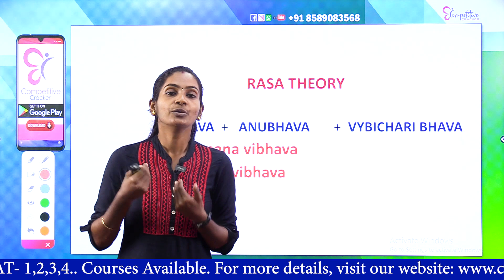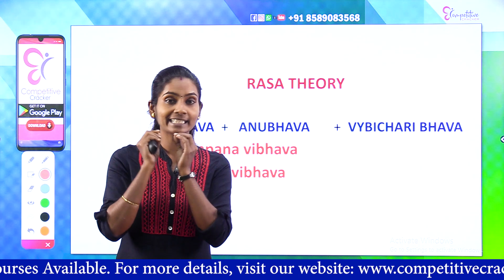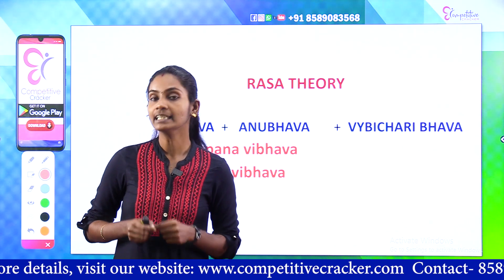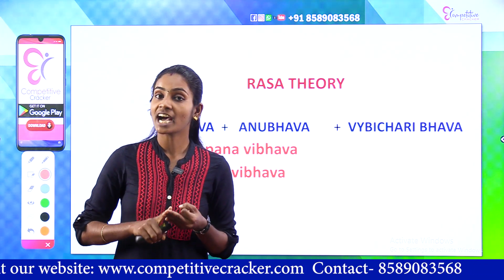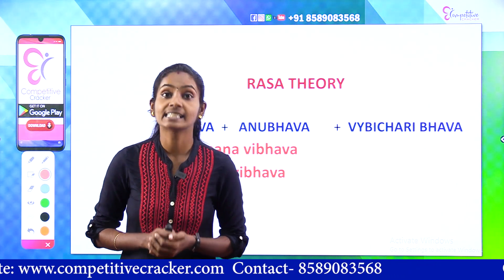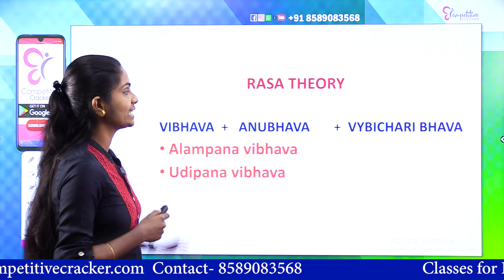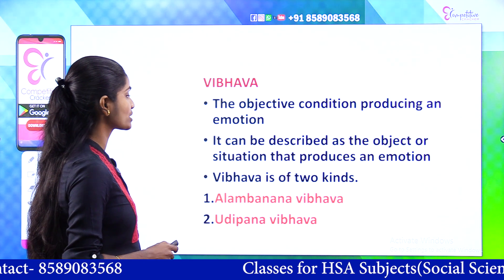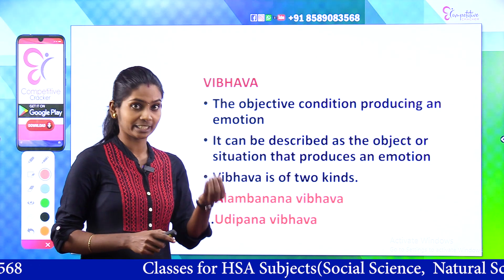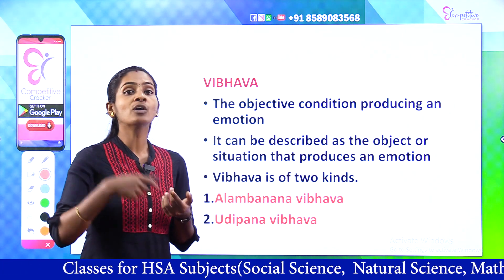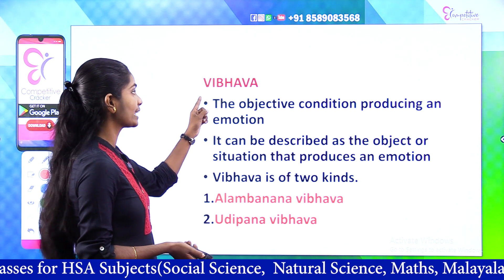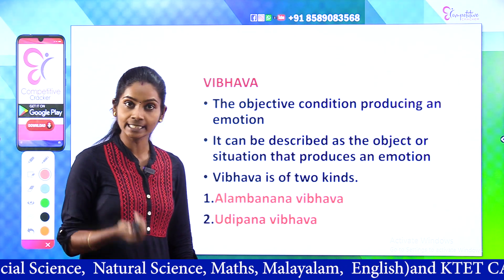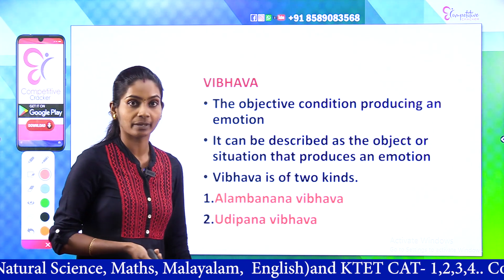A lot of emotions come together — that is what we call Vibhava. Vibhava is the objective condition producing an emotion. It can be described as the object or situation that produces an emotion. If you have an object or a situation, it produces emotions. Vibhava is of two kinds.